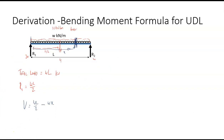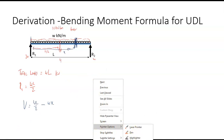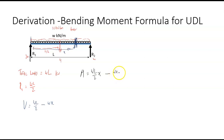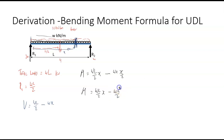To get the bending moment at distance x, the bending moment equals the reaction force wL over 2 multiplied by distance x, minus the distributed load wx acting through its centroid at x over 2. So the bending moment is equal to wL/2 · x minus wx²/2. That gives the shear force and bending moment at any distance x from the support.